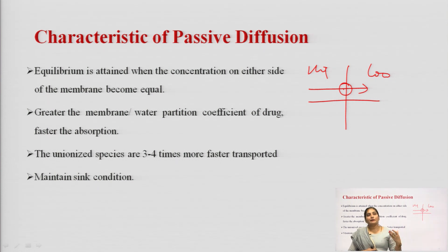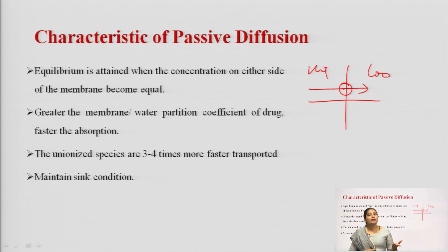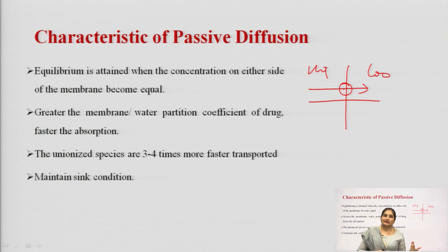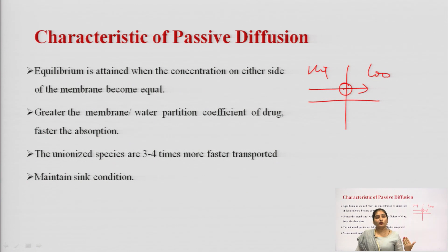Greater the membrane-to-water permeation partition coefficient of the drug, faster will be the absorption, because the rate of drug diffusion is directly proportional to the membrane-water partition coefficient. Also, unionized species are 3 to 4 times more rapidly transported compared to the ionized species.